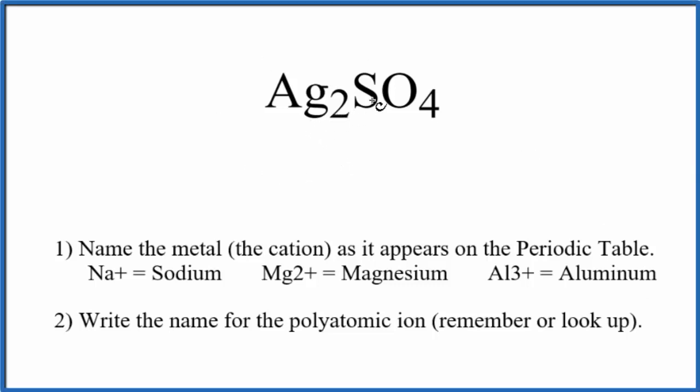To write the name for Ag2SO4, the first thing we need to recognize is we have this SO4 here. This is the sulfate ion. It's a polyatomic ion.